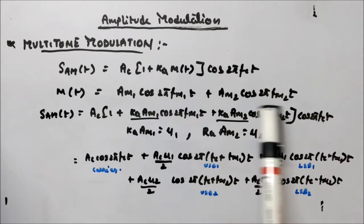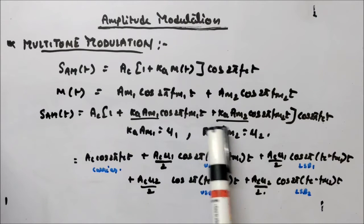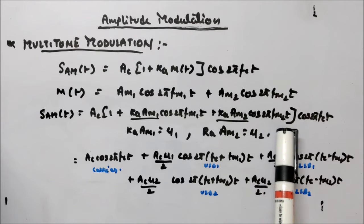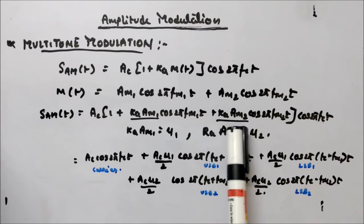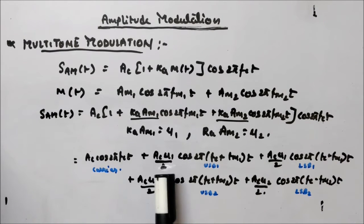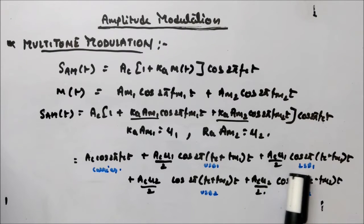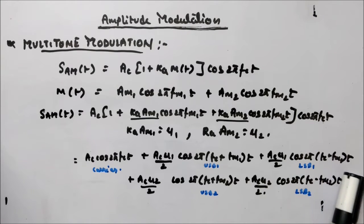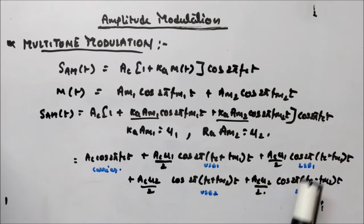If you put m(t) equal to this expression, you will get your AM signal as AC·(1 + KA·AM1·cos(2π·fm1·t) + KA·AM2·cos(2π·fm2·t))·cos(2π·fc·t), where KA·AM1 is your mu1 and KA·AM2 is your mu2. If you expand this expression, you will get AC·cos(2π·fc·t) + (AC·mu1/2)·cos(2π(fc − fm1)t) + (AC·mu1/2)·cos(2π(fc + fm1)t) + (AC·mu2/2)·cos(2π(fc − fm2)t) + (AC·mu2/2)·cos(2π(fc + fm2)t).